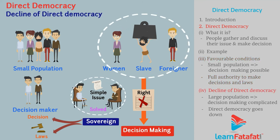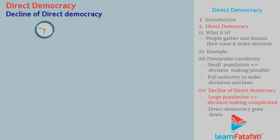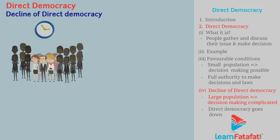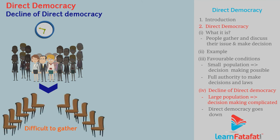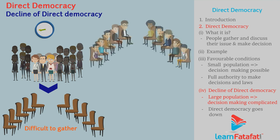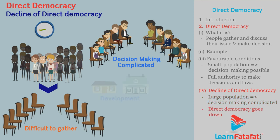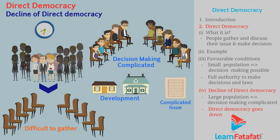Decline of direct democracy: With time, the population increased. The increased population made it difficult to gather at a place. Even if it was possible to gather, the decision making process became complicated. Similarly, as development entered the world, the issues became much more complicated, and thus the efficiency of direct democracy went down. As a result, direct democracy started declining.